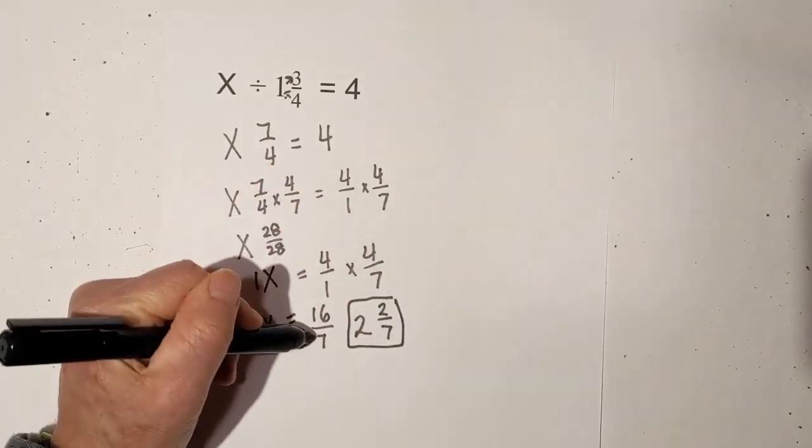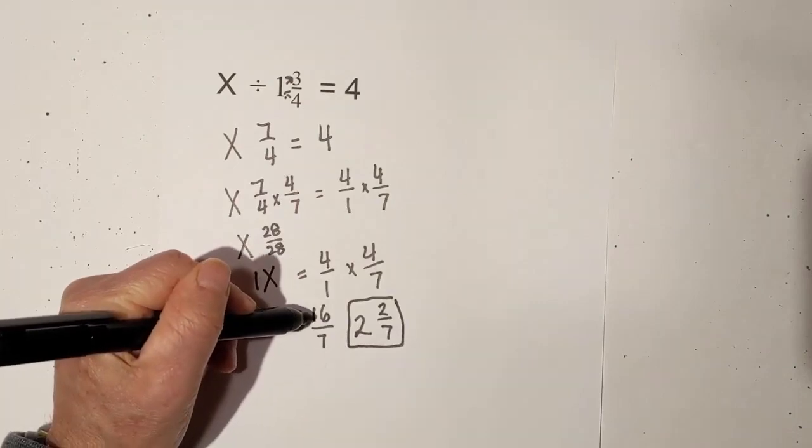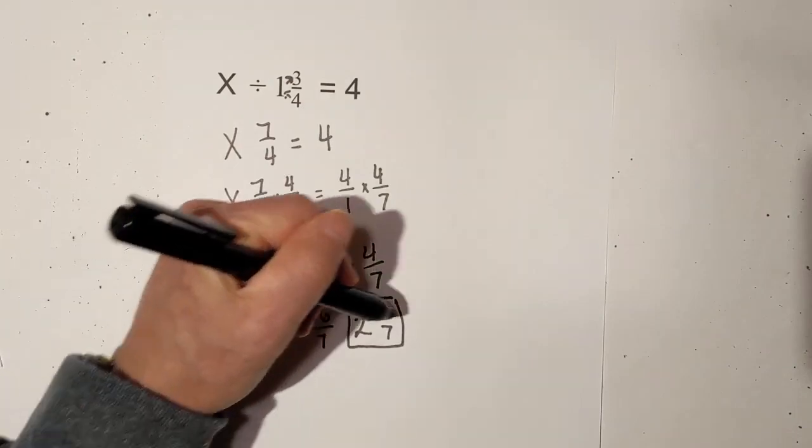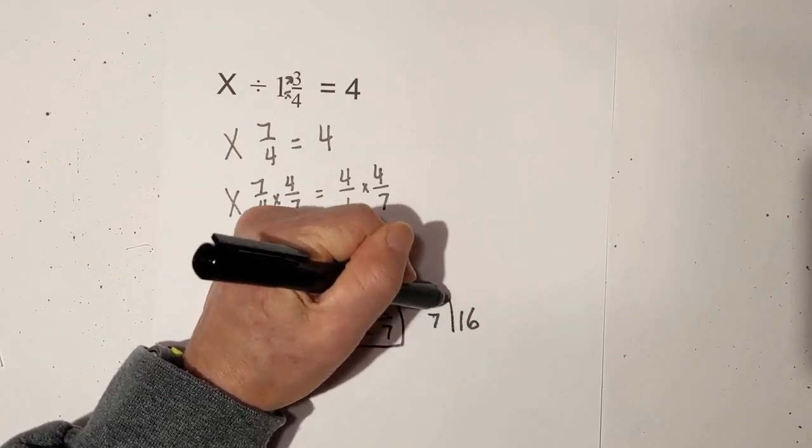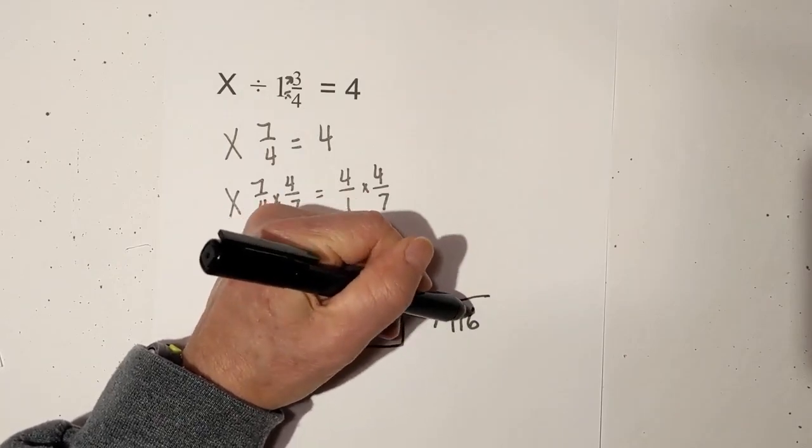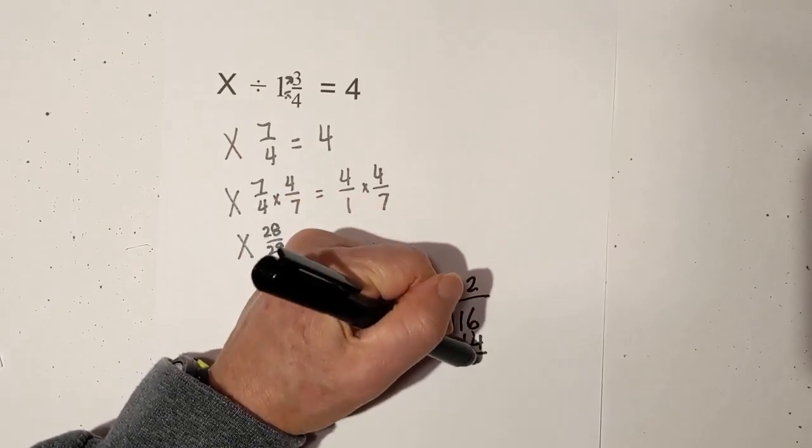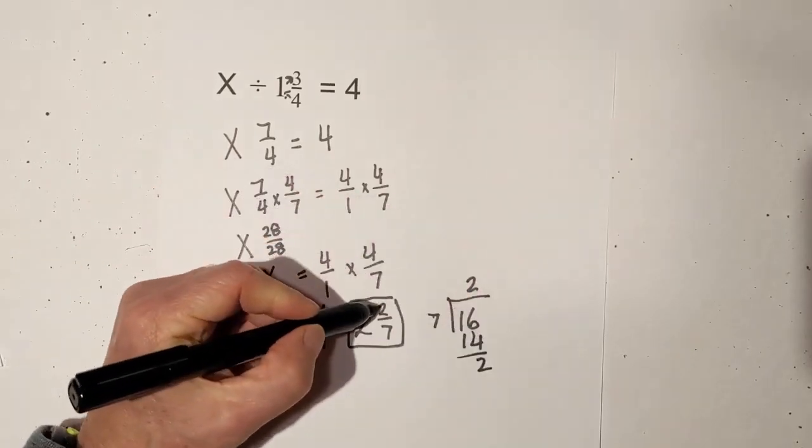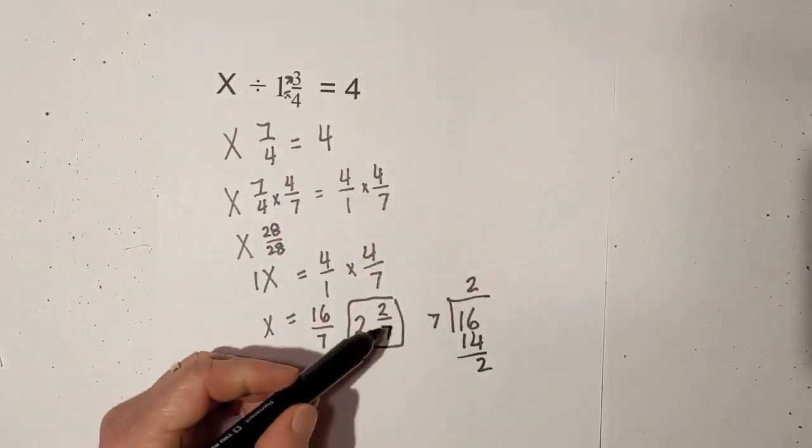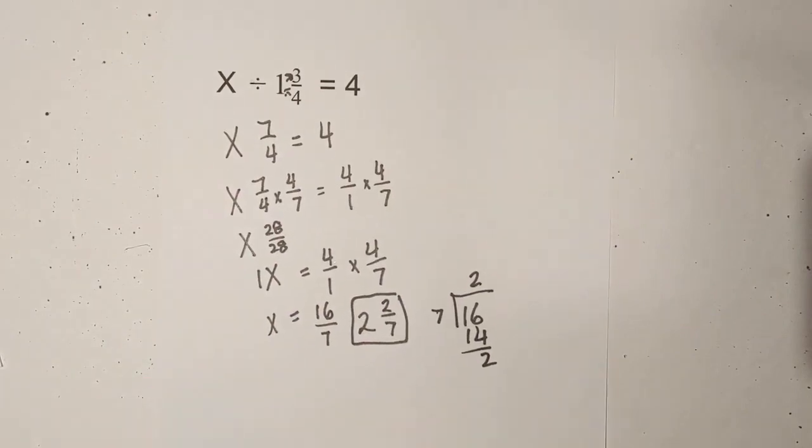Let me show you what I did. I took 16 divided by 7. 7 goes into 16 two times, which is 14, that gives you a remainder of 2, and then I placed that over 7. That's how I got 2 and 2 sevenths. Now let's move on to our last one, multiplication.